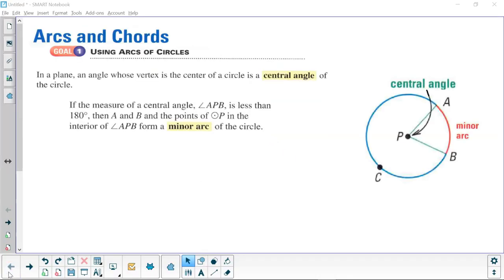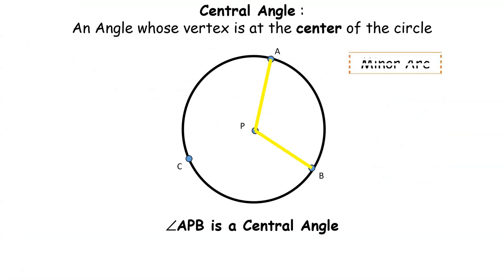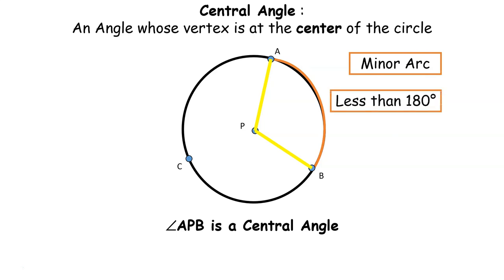The arcs on the outside of the circle are minor and major. Let's discuss a minor arc. Here we see the minor arc in orange. This would be less than 180 degrees. That is why it's called a minor arc. We use two letters to name it, and we write it this way. Arc AB.